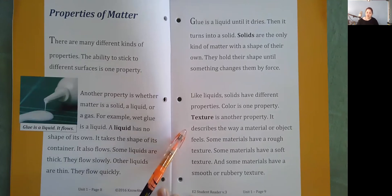It describes the way a material or object feels. Some materials have a rough texture. Some materials have a soft texture. And some materials have a smooth or rubbery texture.